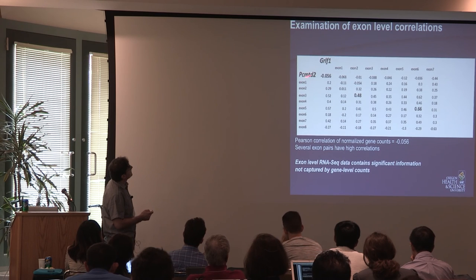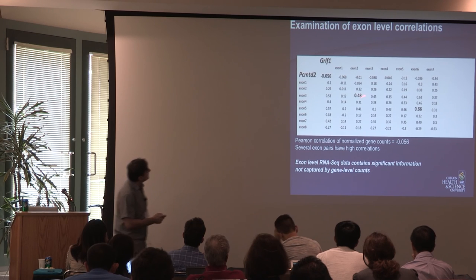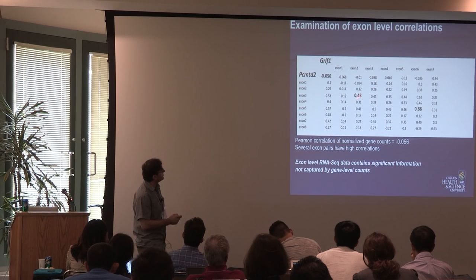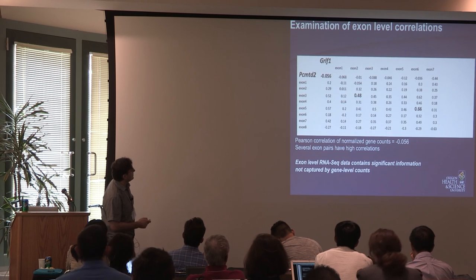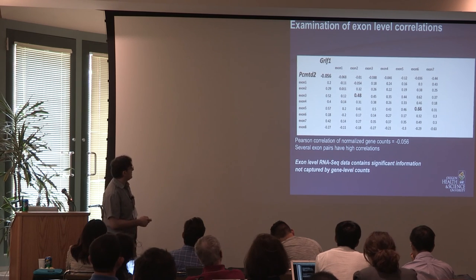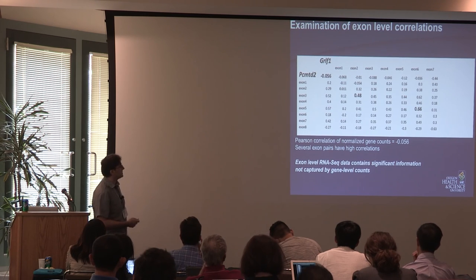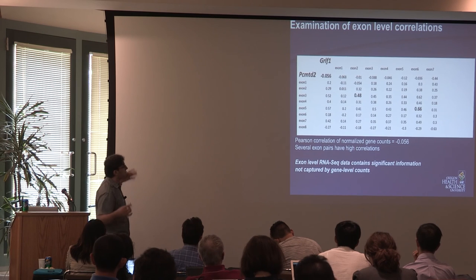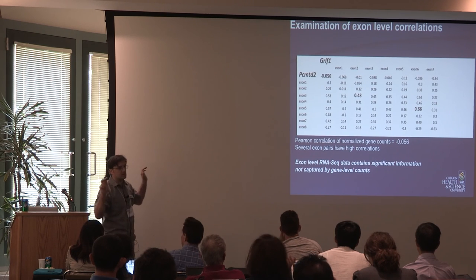One of the first things I did when confronted with RNA-seq data mapped to individual exons was look at the correlations between individual exons and correlations between genes. At the gene level, these two genes have virtually no correlation. However, if you look at the exon level, you find fairly large correlations. This indicated to me that the exon-level information is different from just compressing everything under the gene expression level.